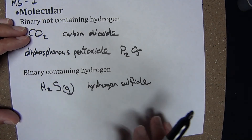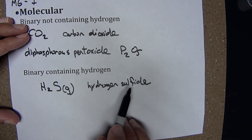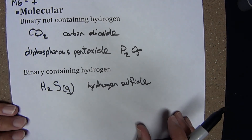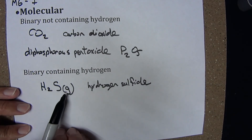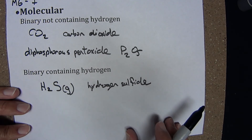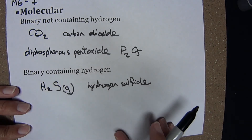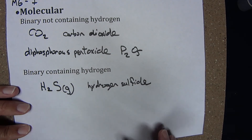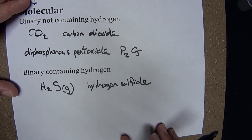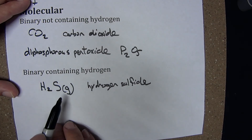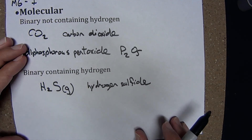When the binary molecular compound contains hydrogen, the rules are a bit different and I don't tend to use those prefixes. For example, with H₂S I simply call this hydrogen sulfide — not dihydrogen sulfide or dihydrogen monosulfide. When the binary compound contains hydrogen, it's simply 'hydrogen' and then the stem and -ide suffix associated with that other non-metal. I've indicated the physical state here because these hydrogen-containing molecular compounds, when in aqueous solution, tend to behave as acids.